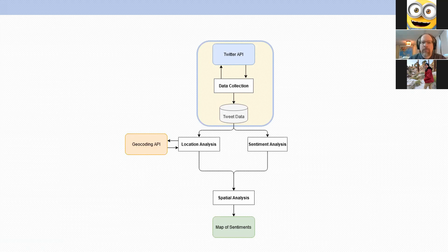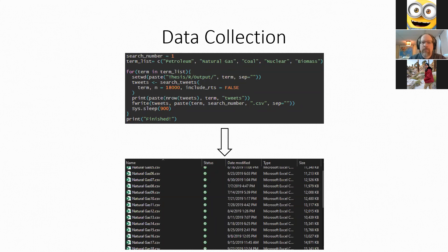For data collection I used the Twitter API, working in R with the package rtweet. I collected data weekly from May 2019 to the end of January 2020, searching different key terms related to energy production and reviewing the returned results. I refined my research to natural gas for a few reasons: most tweets were actually relevant to natural gas, unlike terms such as 'nuclear' which also return discussion of nuclear war, or 'biomass' which skews toward environmental topics not specific to energy production.